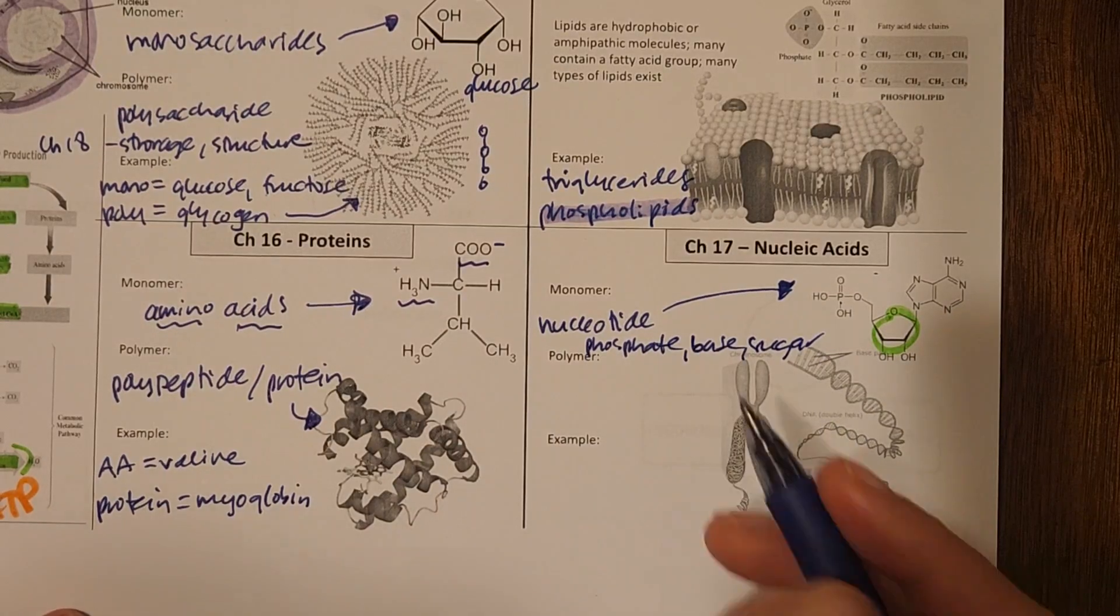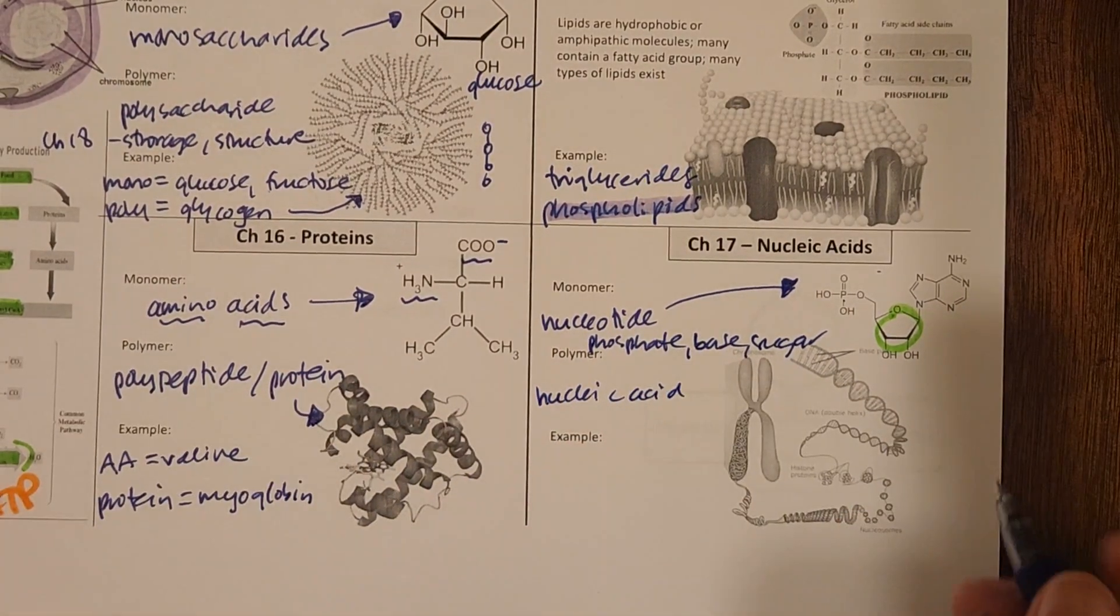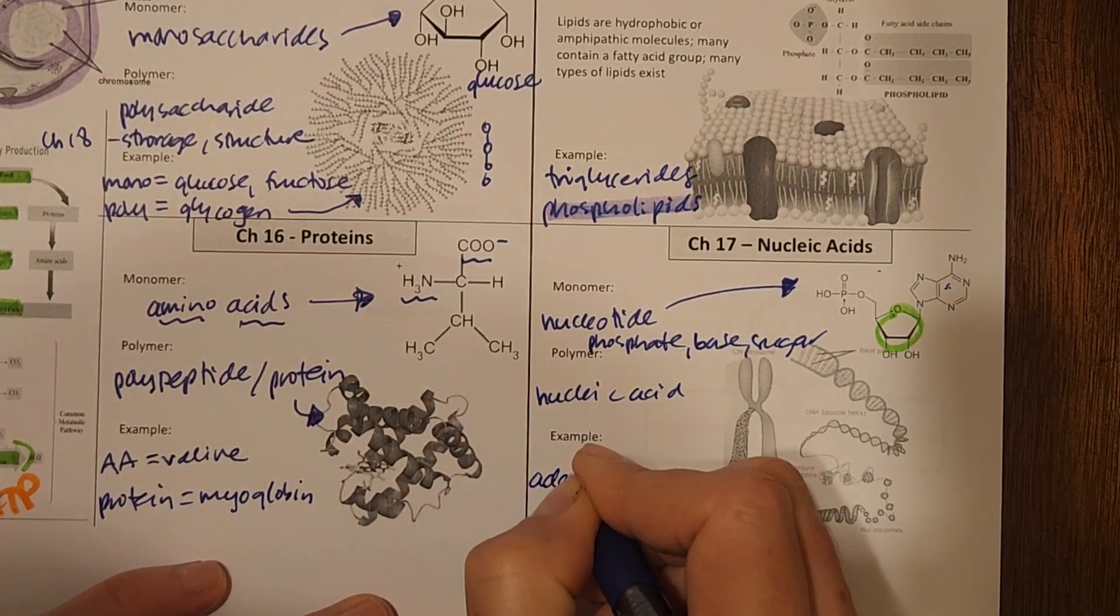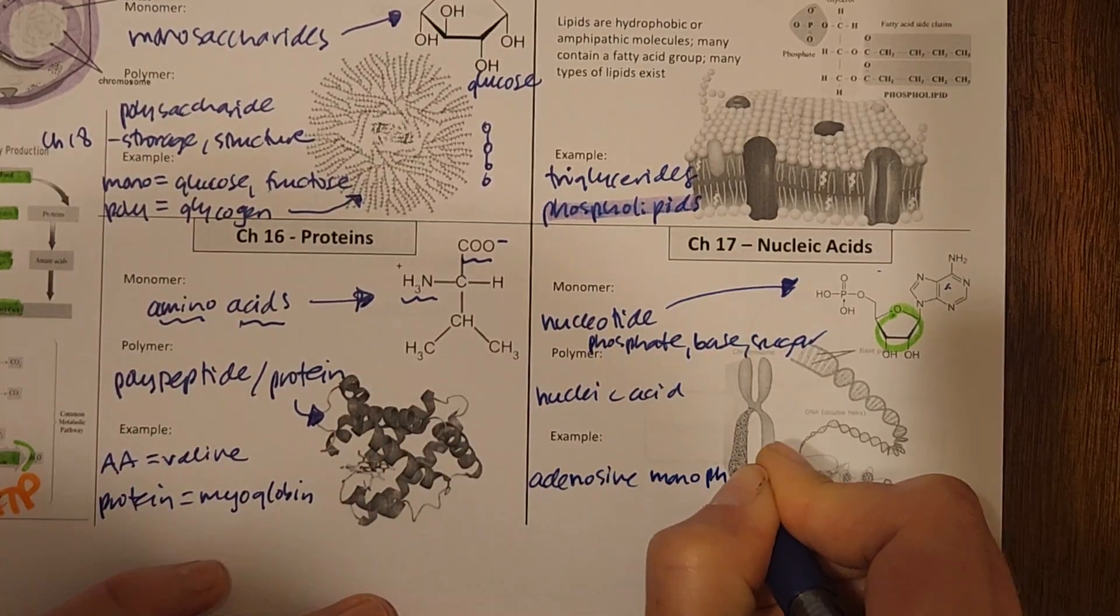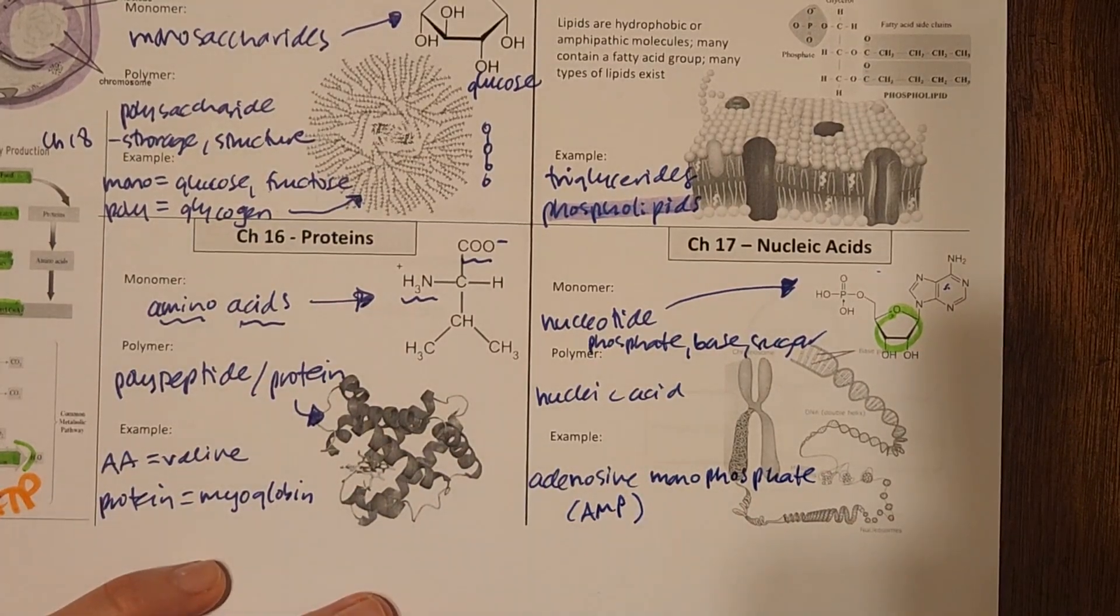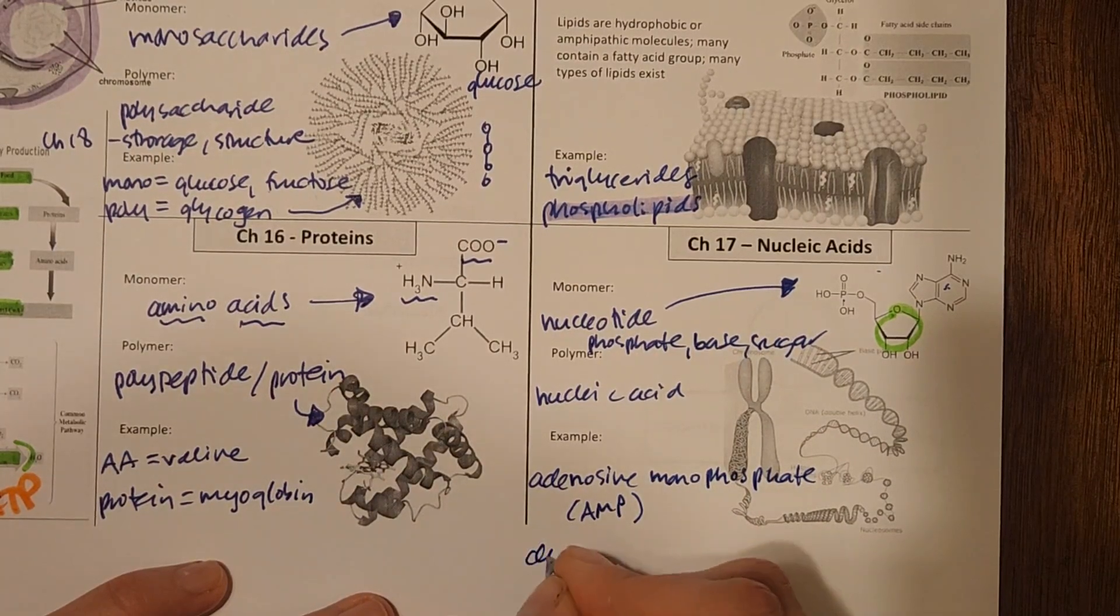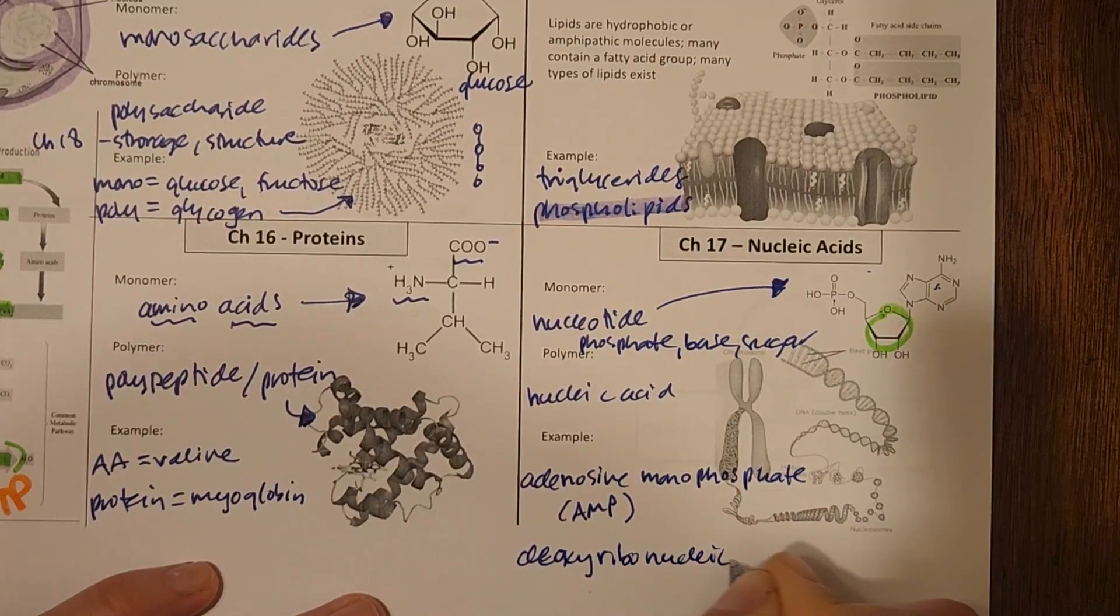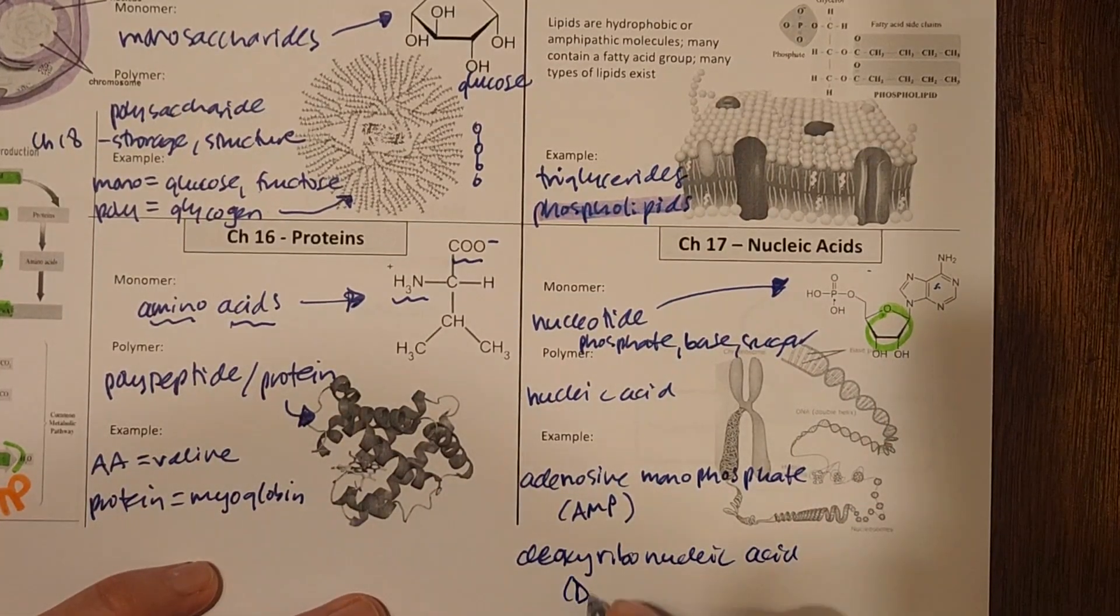Now when you string a bunch of those nucleotides together, you get what we call a nucleic acid. And an example up here on top, this nucleotide, we name adenosine monophosphate, or AMP. Sometimes you'll see that show up in different pathways. And then our double helix here, we call deoxy, as in without oxygen, ribonucleic acid. Ribose is the sugar here, and that is DNA.